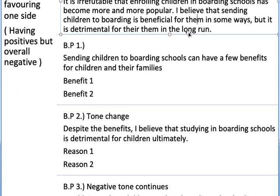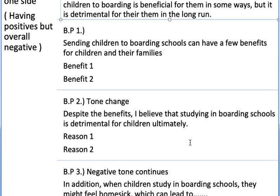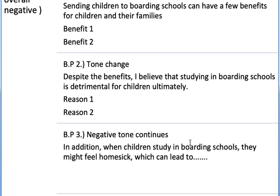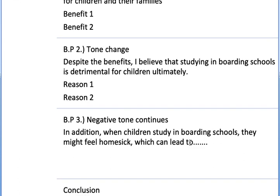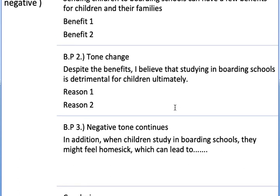Body paragraph 1: 'Sending children to boarding schools can have a few benefits for children and their families' — benefit 1 and benefit 2. In body paragraph 2 my tone will totally change: 'On the other hand' or 'Despite the benefits, I believe that studying in boarding schools is detrimental for children ultimately.' I have made two paragraphs for the negative development and one for the positive — exactly matching what I wrote in the intro: some positives but on the whole negative in the long run.